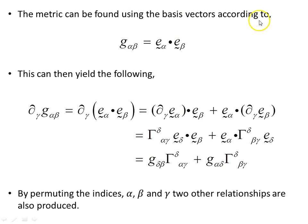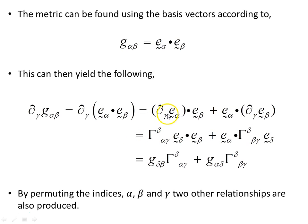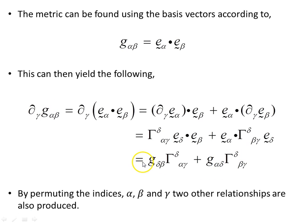The metric can be found using the basis vectors according to G alpha beta — this is a covariant basis. It's the dot product of the covariant basis vectors. Now if we take the partial derivative of this metric, which is the partial derivative of the scalar product of its basis vectors, we produce this object. Following the rules used earlier, we end up with the connection coefficients — the affine connections — and factorizing out the scalar product, E delta dot E beta gives us this object, and E alpha dot E delta gives us this object. So the partial derivative of the metric leads to this expression.